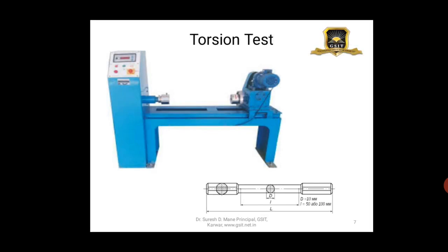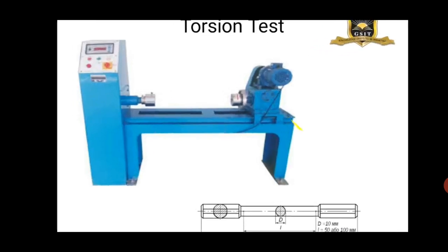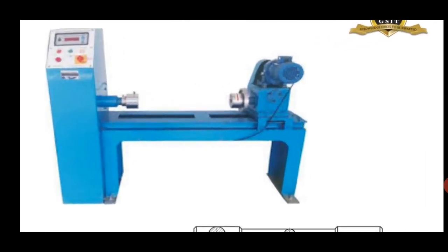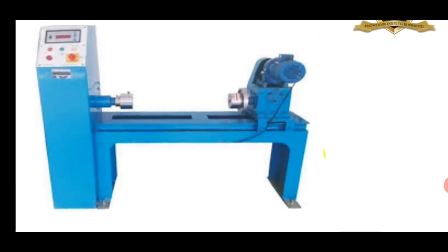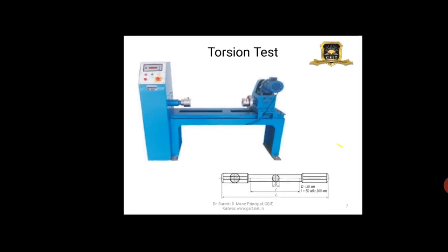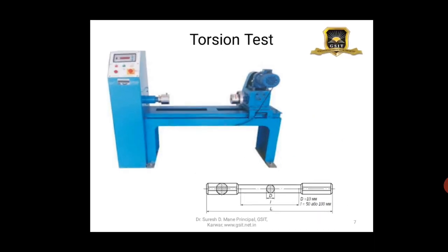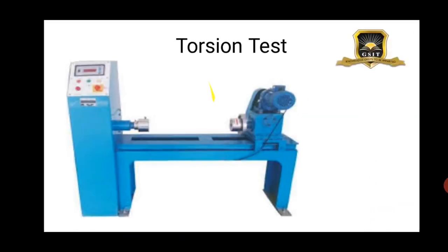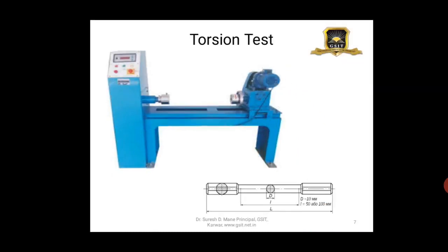Then you have the torsion test. You can see the two silver-colored chucks where a specimen is held between them and twisted until it breaks, and the digital readout allows the readings to be recorded.